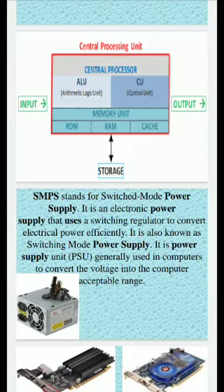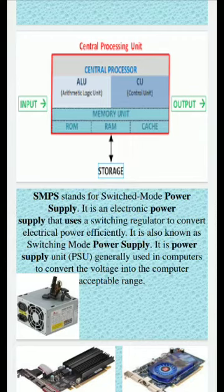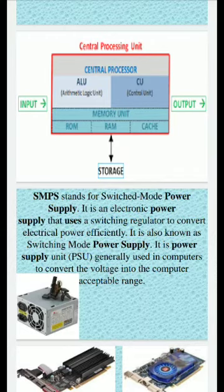ALU, or Arithmetic Logic Unit, performs all the arithmetic and logical operations such as addition, subtraction, and many more. CU, or Control Unit, controls the activities of a computer system. It decodes the instructions, determines the storage area of instructions and data, takes data to the ALU and from the ALU to the main memory and then to any other output device. The memory unit receives data, holds it, and delivers it according to the instructions from the control unit, performing a very important role in smooth functions of the total computer system.